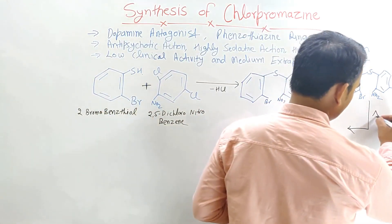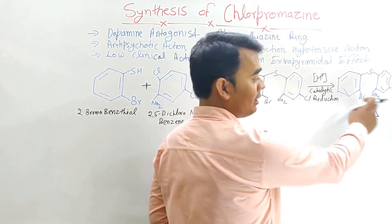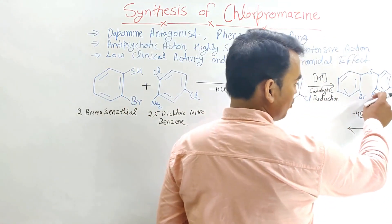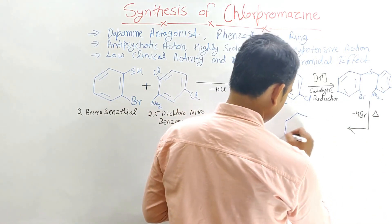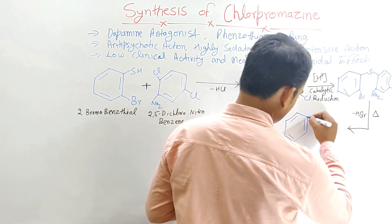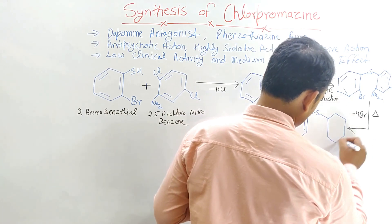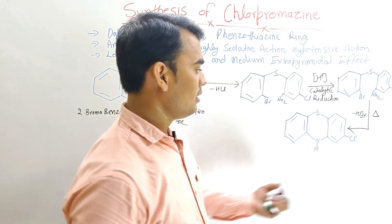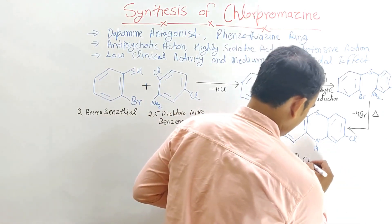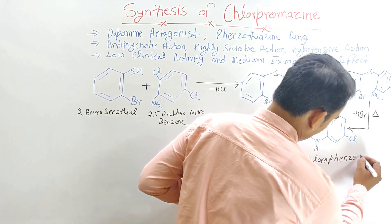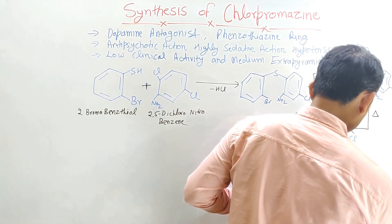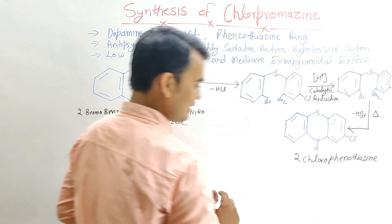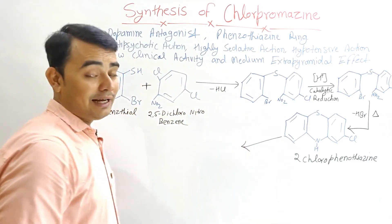When this compound is heated, the bromine is removed in the form of HBr (hydrobromic acid), and the amino group attaches to the benzene ring through cyclization. The final cyclized product is 2-chlorophenothiazine, containing the phenothiazine ring with a chlorine substituent.